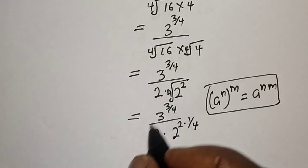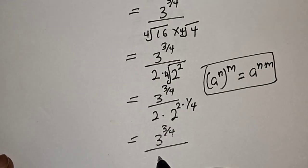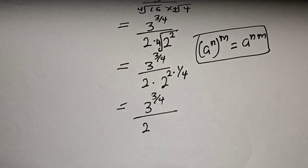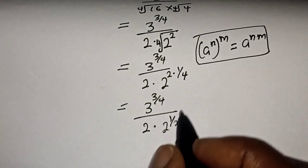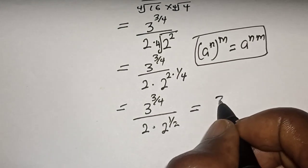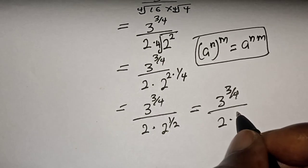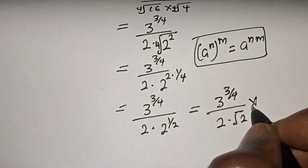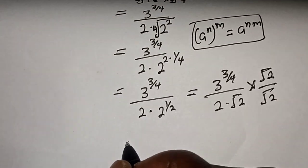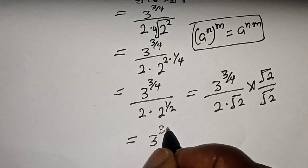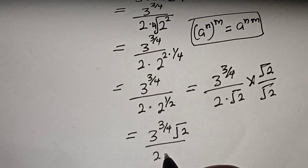Then this becomes 3 raised to power 3 over 4, over 2 multiplied by 2 raised to power 1 over 2. Then this is equal to 3 raised to power 3 over 4, over 2 multiplied by root 2. Now let's multiply both numerator and denominator by root 2 over root 2. Then this is equal to 3 raised to power 3 over 4 times root 2, over 2 multiplied by root 2 times root 2.